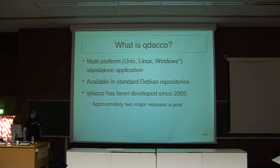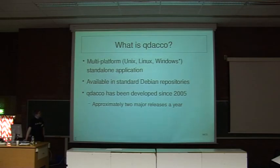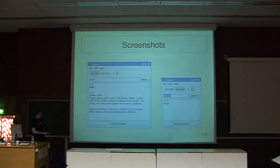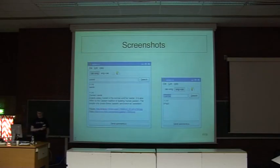What is Cudako? This is the last part of the talk. Cudako is a multi-platform application available in Debian repositories, and it has been developed since 2005. Here you can see two screenshots of Cudako — a simple search for 'penguin' in Catalan, or a longer entry with links to pictures or to Flickr.